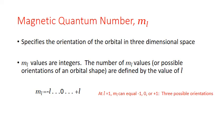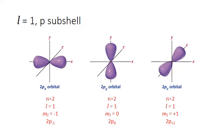Those three orientations correspond to the probability drawings for the P subshell at the second energy level. The 2px orbital, oriented horizontally, is associated with m sub l equals negative 1. The vertical orientation in the y-direction is associated with m sub l equals 0, and the z-direction orientation is associated with m sub l equals plus 1. This is sometimes represented in alternate notation as 2p to the negative 1, 2p to the zero, and 2p to the plus 1.